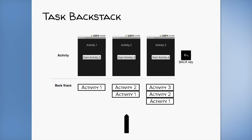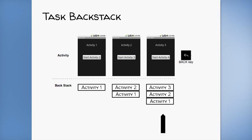Similar to Activity 1, Activity 2 has a single button labeled 'Start Activity 3.' If the user presses this button, Activity 3 will start. So Activity 2 will be suspended, Activity 3 will begin, and Activity 3 will be pushed onto the task backstack. Now let's say the user hits the back button with the idea of going back to Activity 2. At this point, Android kills Activity 3 and pops it off the task backstack. Because Activity 2 is currently at the top of the task backstack, Android will resume that activity, restoring its state and bringing it back into view on the device.